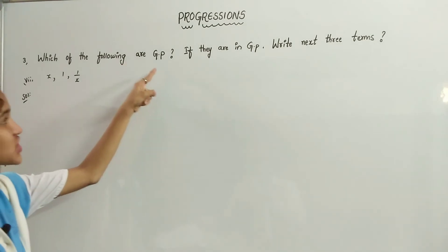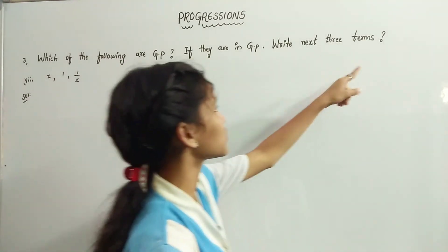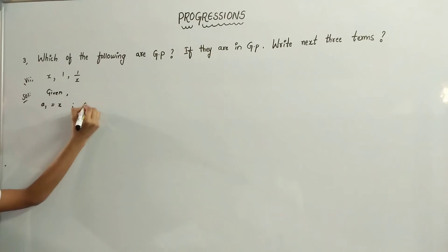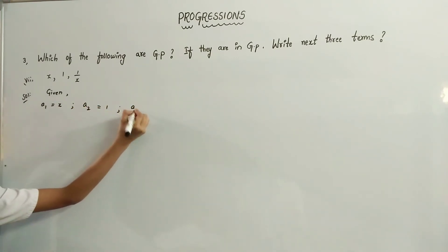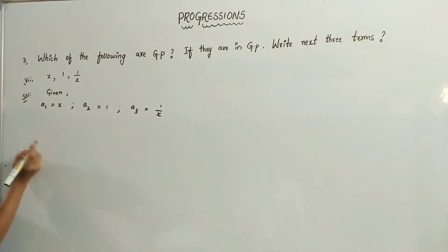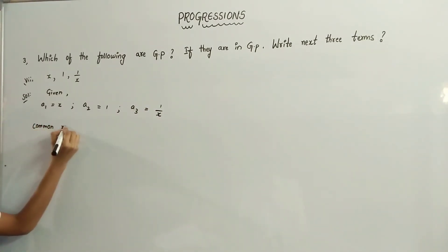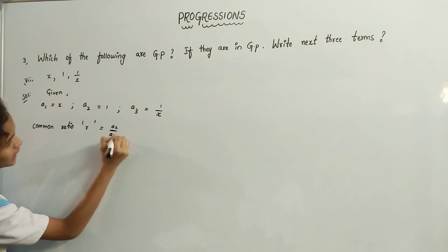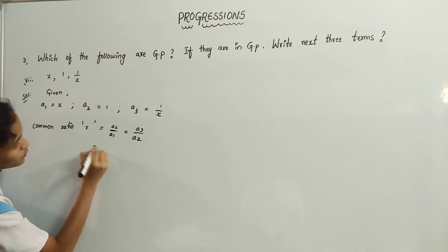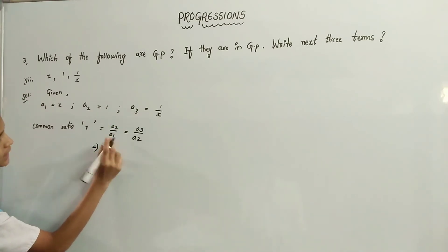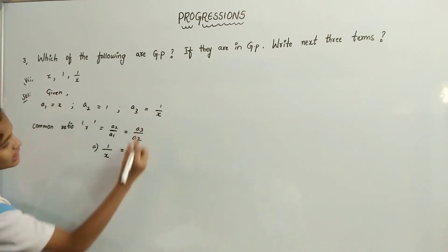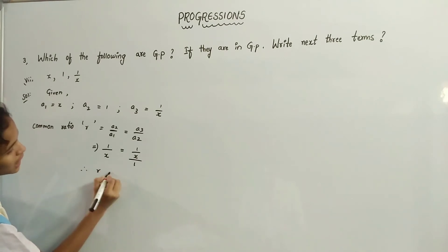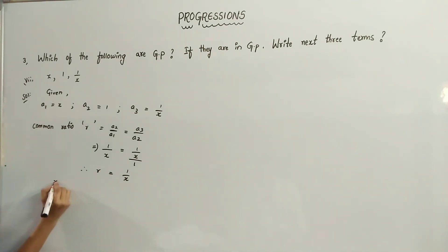Which of the following are GP? If they are in GP, write the next three terms. Given: A1 equals x, A2 equals 1, A3 equals 1 by x. Now we have to find the common ratio. R equals A2 by A1, equals A3 by A2. That implies 1 by x equals 1 by x. Therefore R equals 1 by x, and x, 1, 1 by x are in GP.